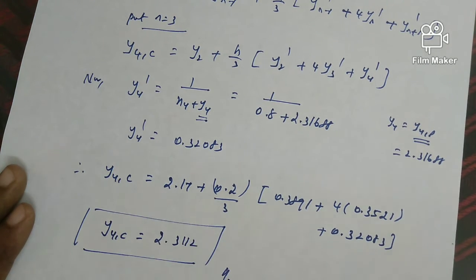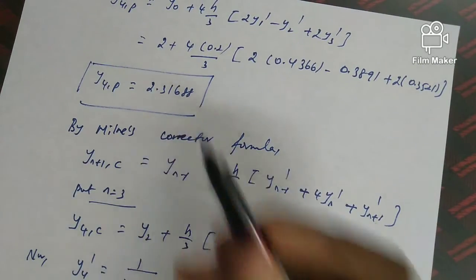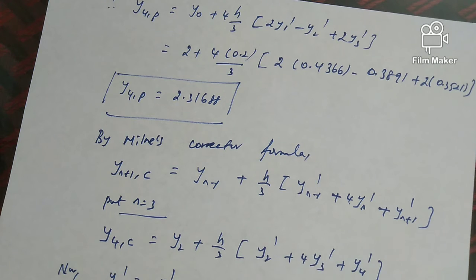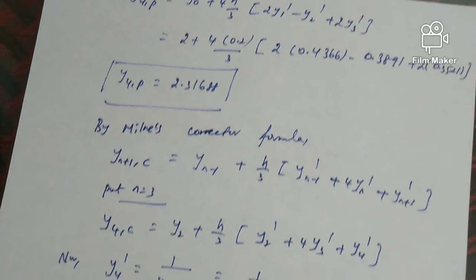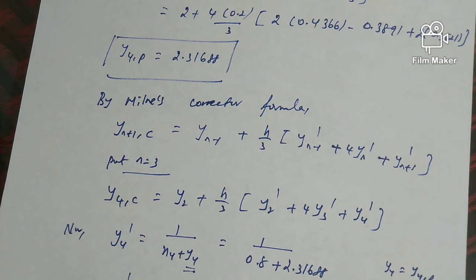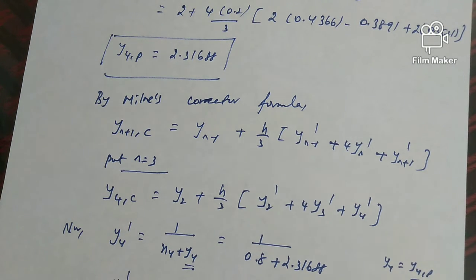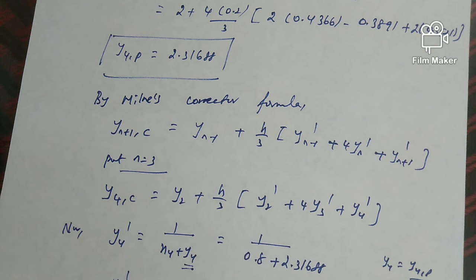Comparing the results: the predictor answer y(4,p) = 2.31688 and the corrector answer y(4,c) = 2.3112 — there is only a very mild variation. As an analogy, Euler's method serves as a predictor result and modified Euler's method serves as the corrector result, since the modified version gives a more accurate value.